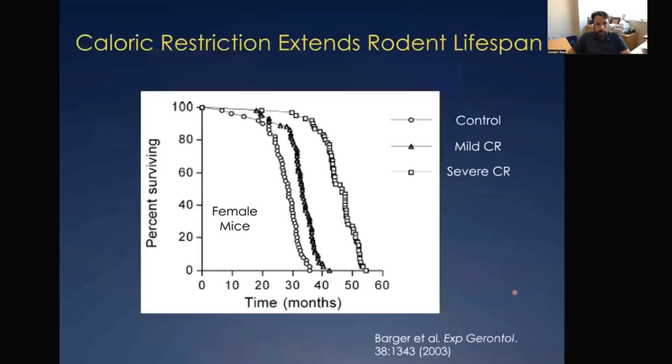The best way we know how to do that right now, at least experimentally in laboratory organisms, is caloric restriction. This is a survival curve from a typical calorie restriction experiment where you simply give the animals less calories — female mice in this case. The inside curve is the control group fed under normal conditions. If you mildly restrict their calorie intake by about 10%, you get the survival curve shown in the middle, where you get a small but significant lifespan extension.